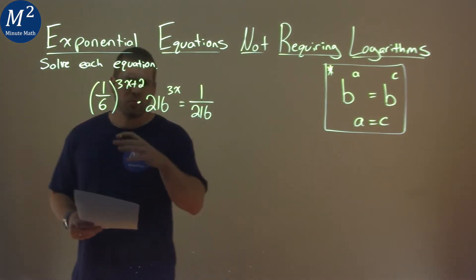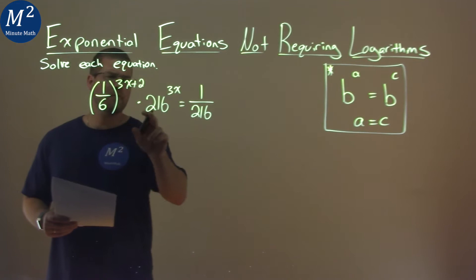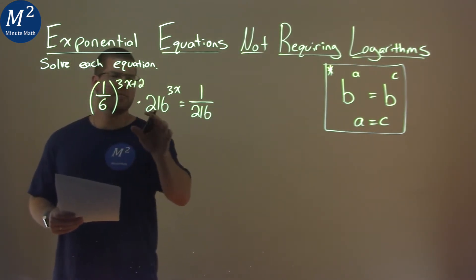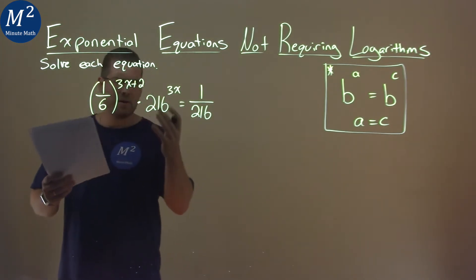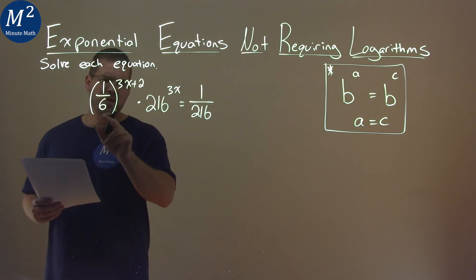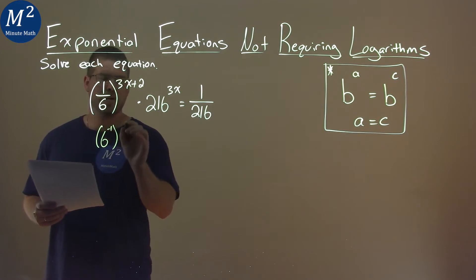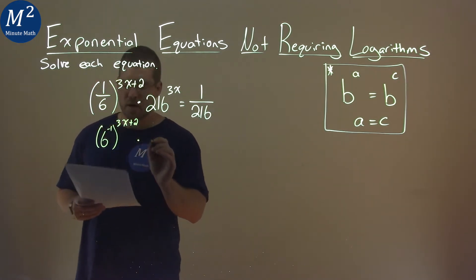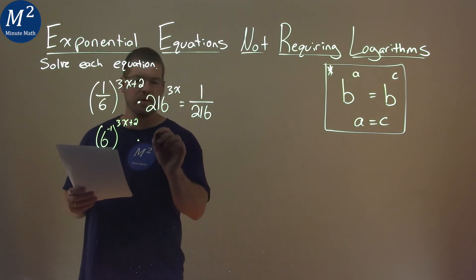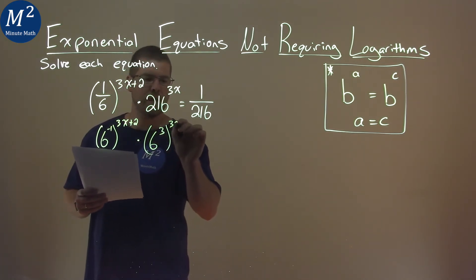What I try to do here is I want to find a same base number raised to an exponent that can give me a good base here. Well, 6 to the negative 1 power is 1 over 6. So I can write this as 6 to the negative 1 power to 3x plus 2 multiplied by 216 is the same thing as 6 to the 3rd power, and we're still raising that to 3x.